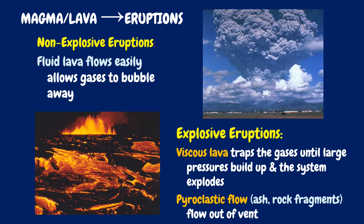A volcanic eruption begins with the formation of magma in the lower section of the Earth's crust. The Earth's crust is made up of massive slabs called plates, which fit together like a jigsaw puzzle. The friction during the movement of plates causes earthquakes and volcanic eruptions. With pressure, magma travels upwards with tremendous force, heating solid rocks and other materials, and creates a new passage to the Earth's surface. Once the magma reaches the air, it is called lava.